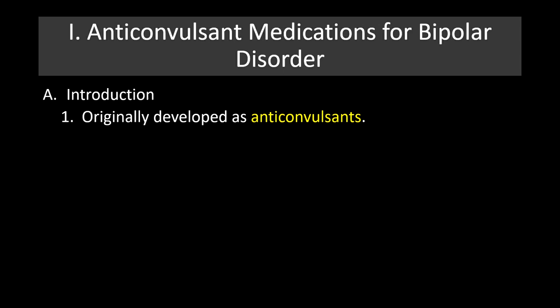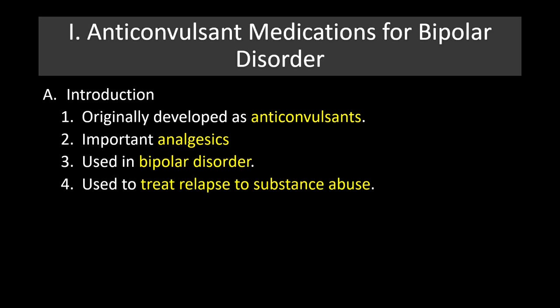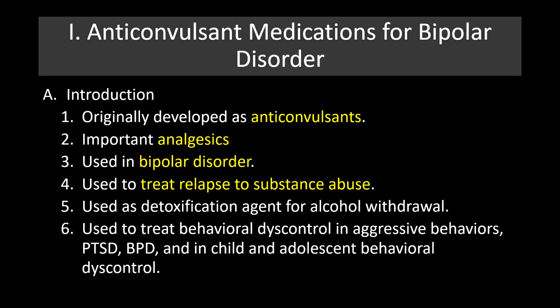Originally, the drugs we'll discuss were developed as anticonvulsants or treatments for seizure disorders. Some are important analgesics — gabapentin in particular is used as a non-opioid analgesic. They can be used in bipolar disorder, to treat relapse to substance abuse, and as detoxification agents for alcohol withdrawal. They can also treat behavioral discontrol and aggressive behaviors associated with PTSD, bipolar disorder, and child and adolescent behavioral disorders such as conduct disorders.